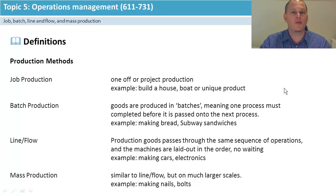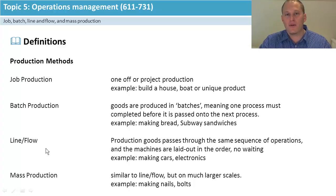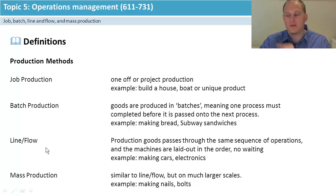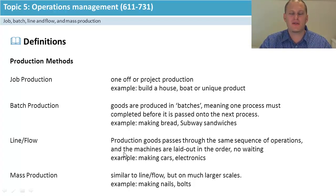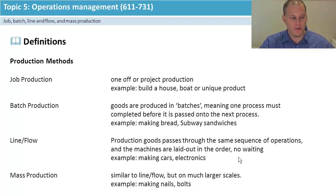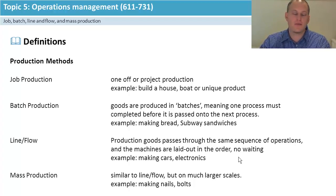Batch production involves pausing between each section. In contrast, line and flow is like a continuous movement all the way through — there's no stopping in between. When a business has standardized the product and wants to make lots of the same thing, like the same iPhone every time, they just want it to continuously flow so they can pump it out, get it on the trucks and send it out.